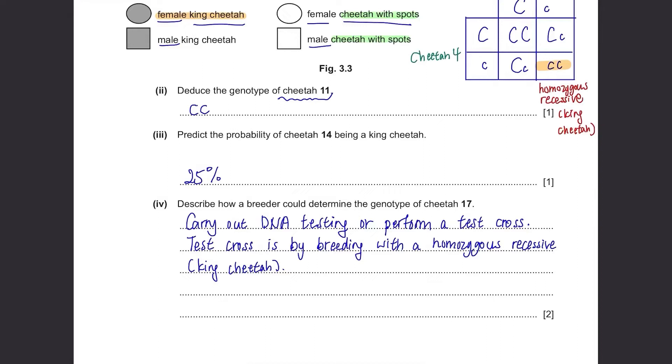If any of the offspring of the test cross are king cheetahs, it means that cheetah 17 is heterozygous and carries a recessive allele. If not, it means that it's a homozygous dominant.